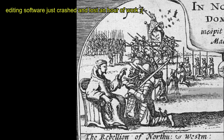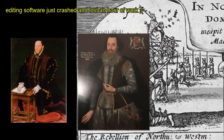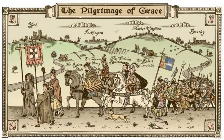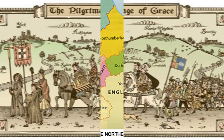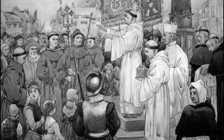Moving on to the revolt itself, the Earl of Northumberland, Thomas Percy, and Earl of Westmoreland, Charles Neville, raised their forces of around 4,500 Catholics and rode on Durham, occupying the cathedral where they performed a Catholic Mass.